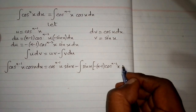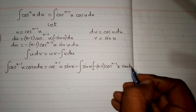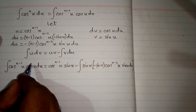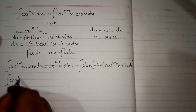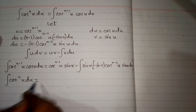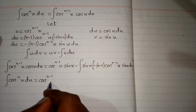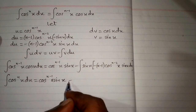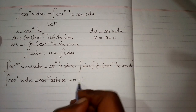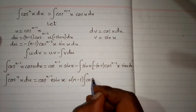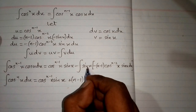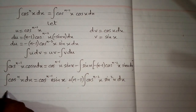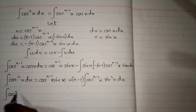So du is minus (n minus 1) cosine raised to the power n minus 2 of x times sine x dx. This gives us the integral of cosine raised to the power n equals cosine raised to the power n minus 1 times sine x, plus n minus 1 times the integral of cosine raised to the power n minus 2 times sine squared x dx.